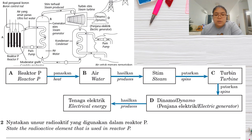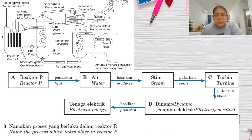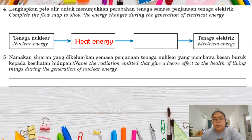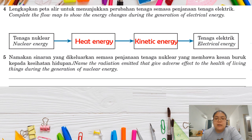The radioactive element used in reactor P to produce nuclear fission is uranium. The process occurring in reactor P is nuclear fission. The energy changes during electricity generation are: nuclear energy (from nuclear fission) → heat energy (to produce steam) → kinetic energy (to turn the turbine) → electrical energy. The radiation emitted that is harmful to living things during nuclear energy generation is gamma rays.